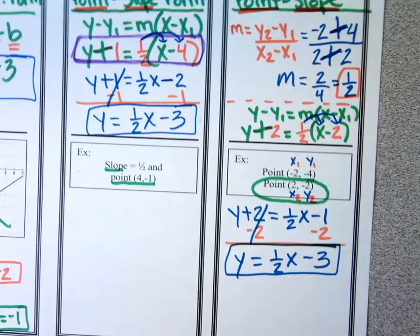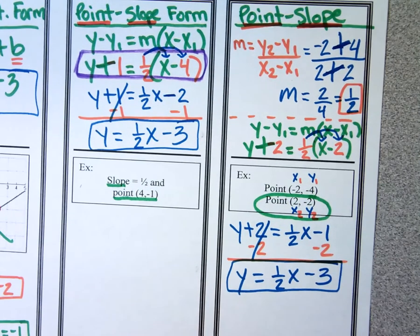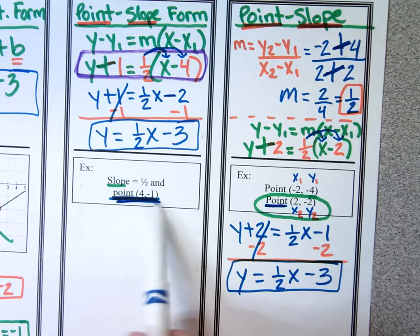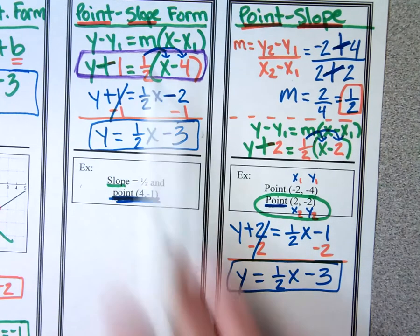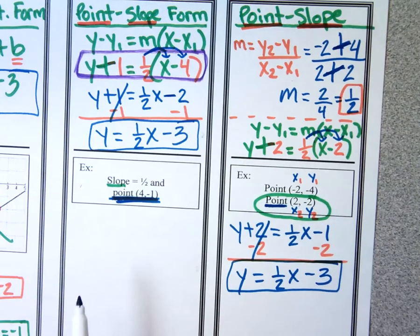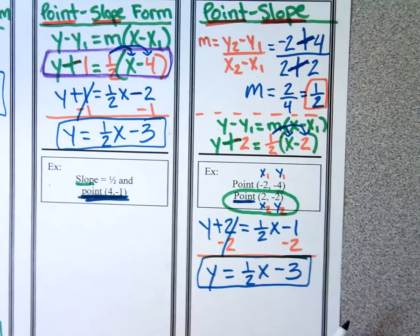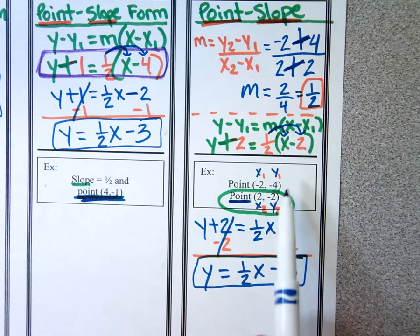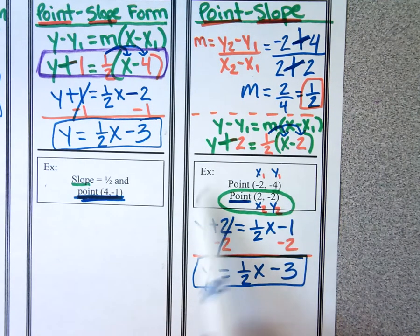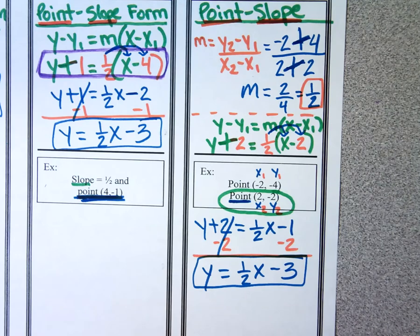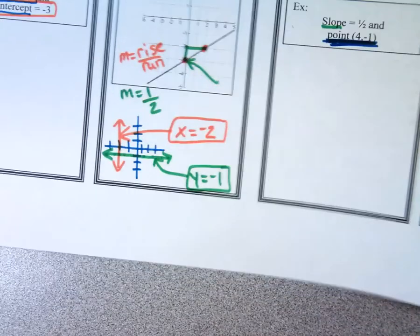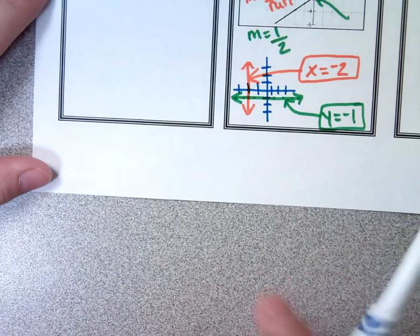These last two cases started with being given a point, so you use point-slope form. If you have the point and the slope, you're ready to begin. If you don't have both, you need to do something else first — like finding the slope. Let's do two more examples.